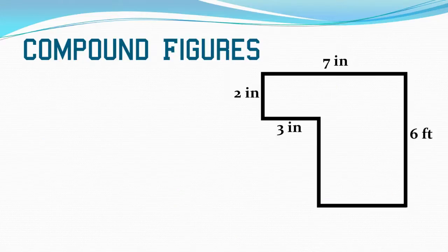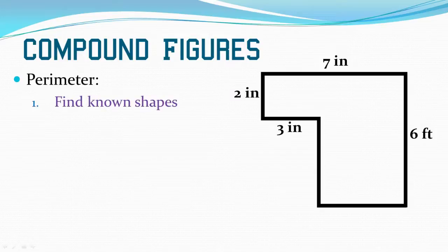Let's look at this compound figure and find its perimeter. Just like the square, just like the rectangle, I need to find all the sides and add them up. I know two inches, seven inches, six inches, and three inches. I'm missing that side that's on the left side, and I'm missing the bottom side.